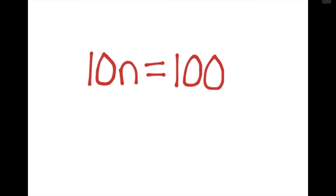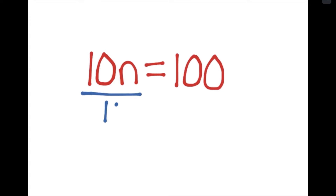To undo 10 times n, I'm going to divide both sides of the equation by the number that's in front of the variable. So that means I need to do 10n divided by 10 equals 100 divided by 10.